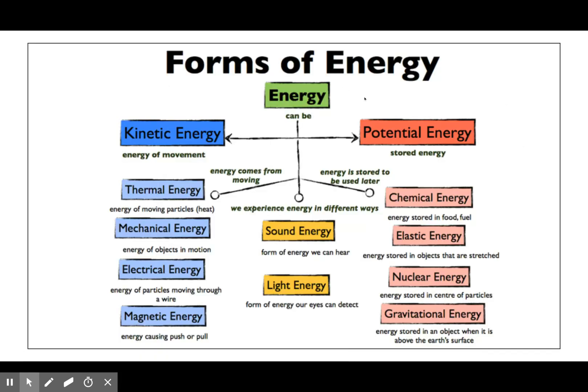Looking at the forms of energy, you have to think of it as kinetic and potential. Potential is when it's stored. If I take a textbook and put it on top of a shelf, there's stored energy in it because I used energy and did work to put the book up. As soon as someone pushes it off, that potential energy is released. Kinetic energy is energy of movement.